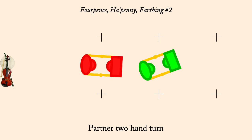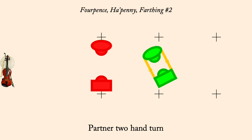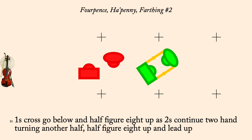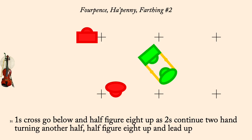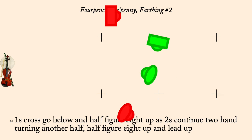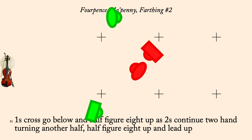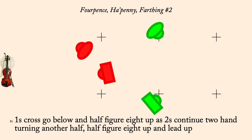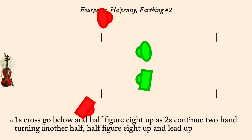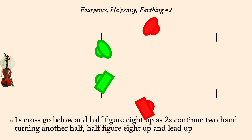One's Cross Go Below and Half Figure Eight Up as Two's Continue Two-Hand Turning Half, then Half Figure Eight Up and Lead Up. Face Partner, Four Changes of Rights and Lefts.